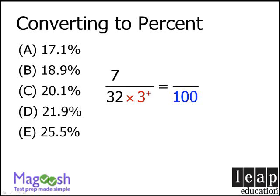Now if we multiply our denominator by a number slightly larger than 3, we must also multiply our numerator by a number slightly larger than 3. When we do this, we get a number slightly larger than 21, and this is equal to a number slightly larger than 21%. Looking at our answer choices, our answer must be D, since it is slightly larger than 21%.